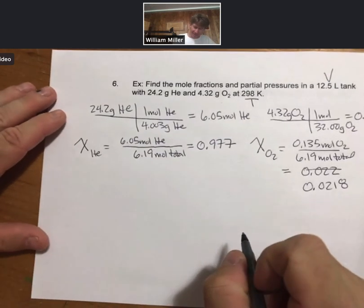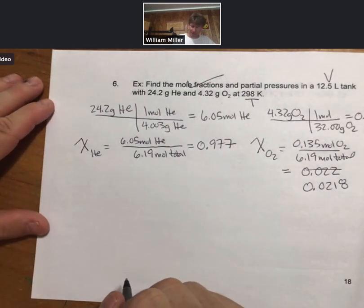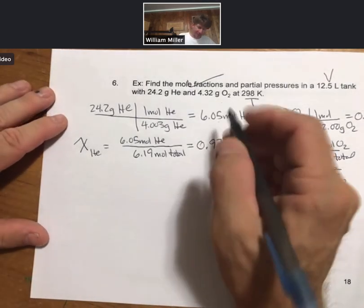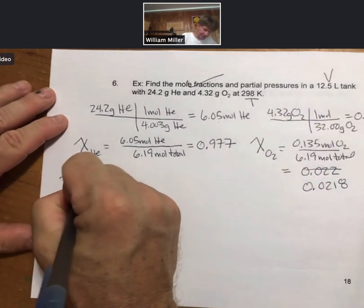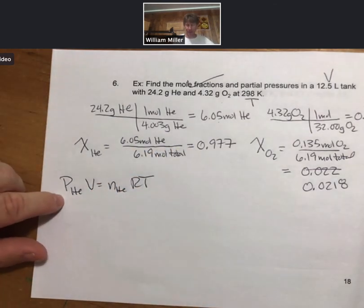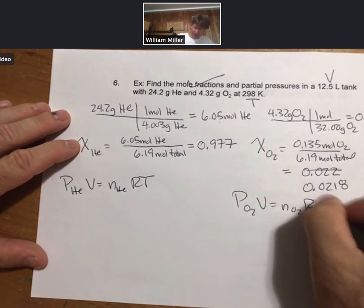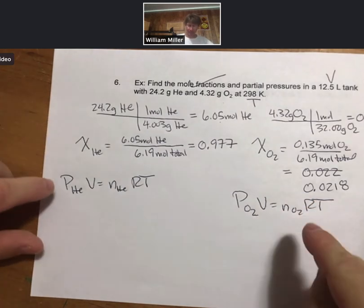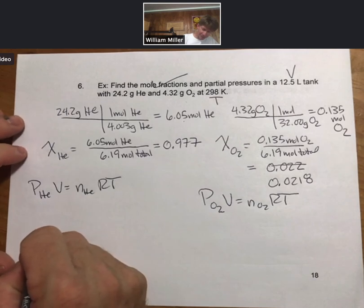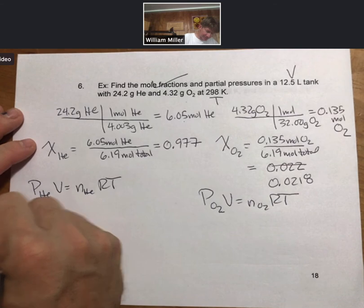Now we've got our mole fractions. Now we need partial pressures. What I'm going to do is I'm going to go ahead and use the moles in the ideal gas law for helium, specifically for helium, and then specifically for oxygen. That will give me my partial pressures for each of these. Plugging everything in. I'm looking for partial pressure. Let's this time solve.